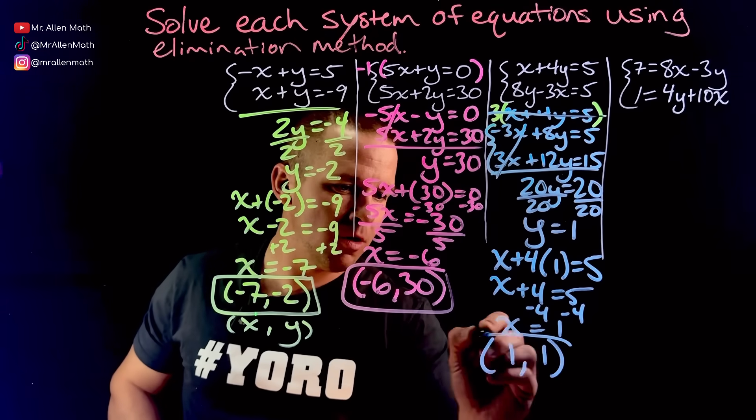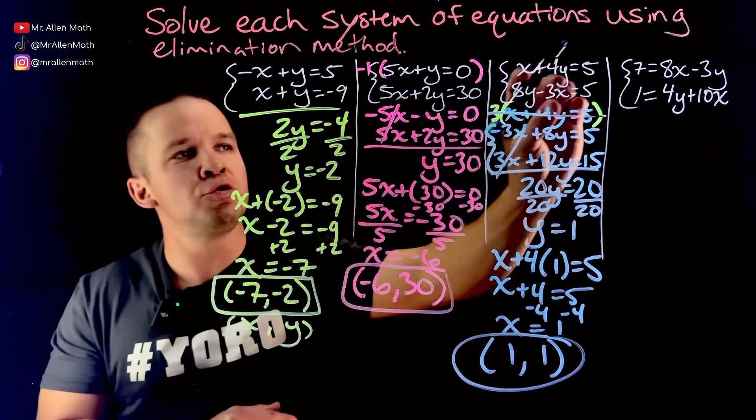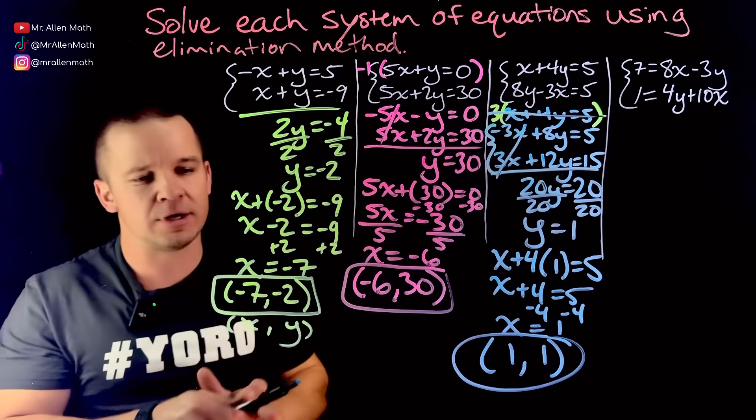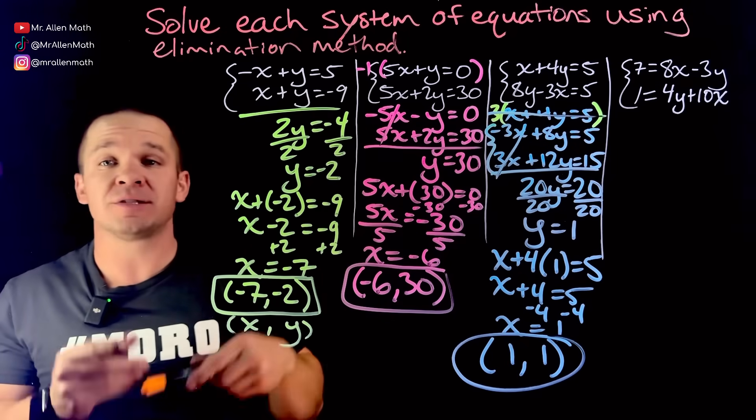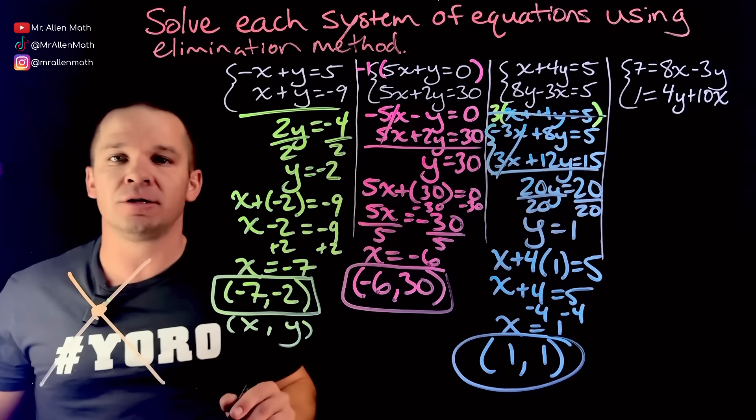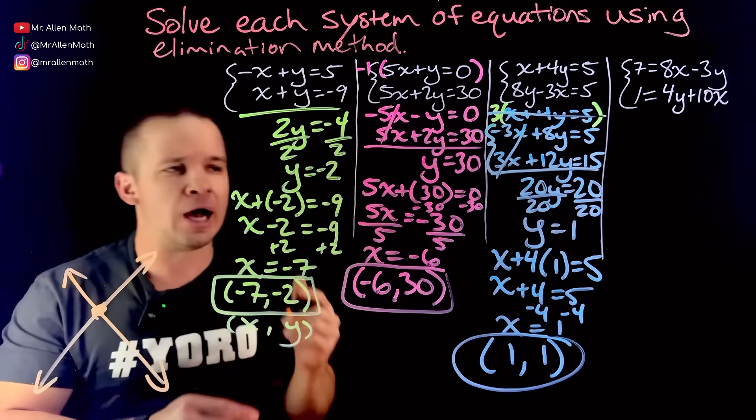That's fun. One comma one. X is one, y is one, ordered pair. The point of intersection of these two linear equations when graphed is my solution. Solution to a system of equations is an ordered pair because it's a point on a graph. I got two lines, boom. That's a solution right there. I'm gonna put arrows on my lines.